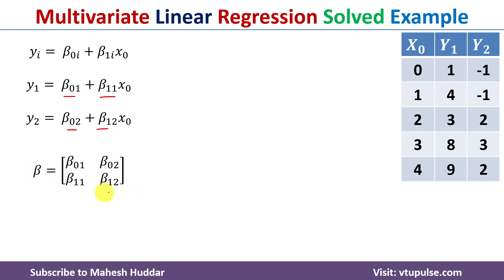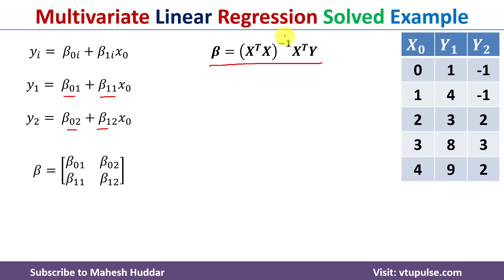To find this beta matrix, we use the normal equation: β = (X'X)⁻¹ · X' · Y. This is used in both multivariate and multiple linear regression. We take X-transpose, multiply it by X, take the inverse of the resulting matrix, multiply by X-transpose, and then multiply the whole result by Y. This gives us the regression coefficients.